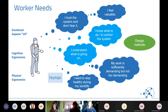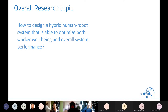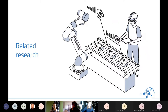Design methods from other areas exist but aren't well established within manufacturing. The overall research topic my group and I are pursuing is: how to design a hybrid human-robot system that is able to optimize both worker well-being and overall system performance, to really come to some kind of handshake — a working-together situation.